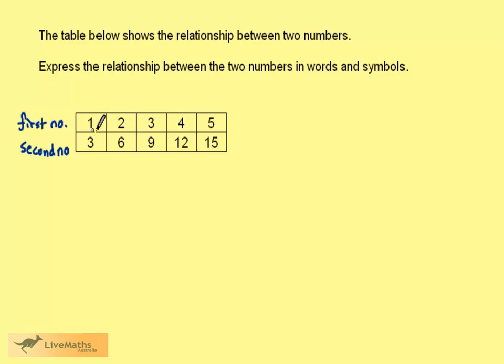We have 1, 3, 2, 6, 3, 9 and so on. We can see that the second number is equal to 3 times the first number. Looking at the table you can see this is true throughout.